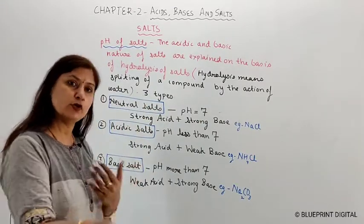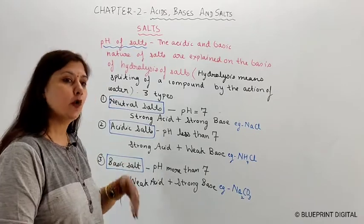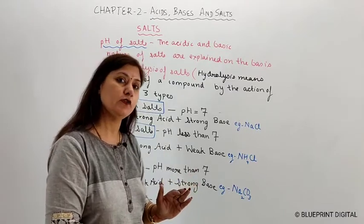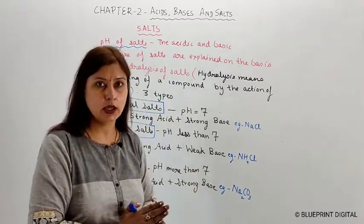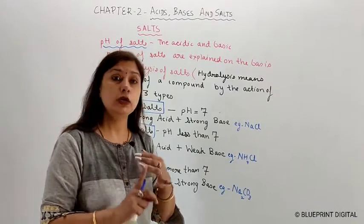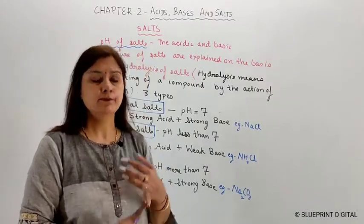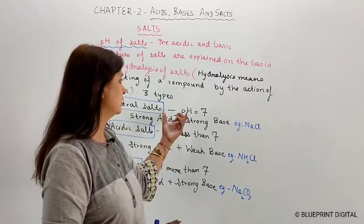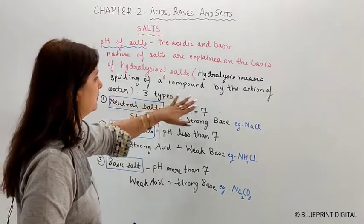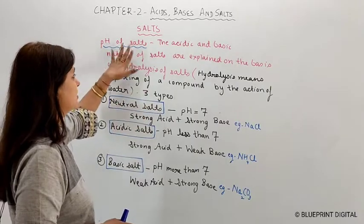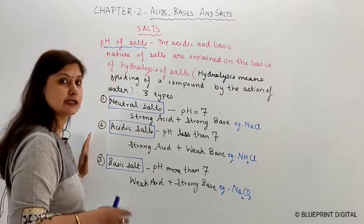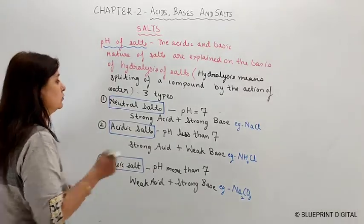Because the ions dissociate, when salts dissolve in water they conduct electricity in aqueous solution, just like acids and bases. Salts conduct electricity because their ions conduct it, and when we do hydrolysis they dissociate into ions. On the basis of pH behavior, salts are divided into three types: neutral salts, acidic salts, and basic salts.